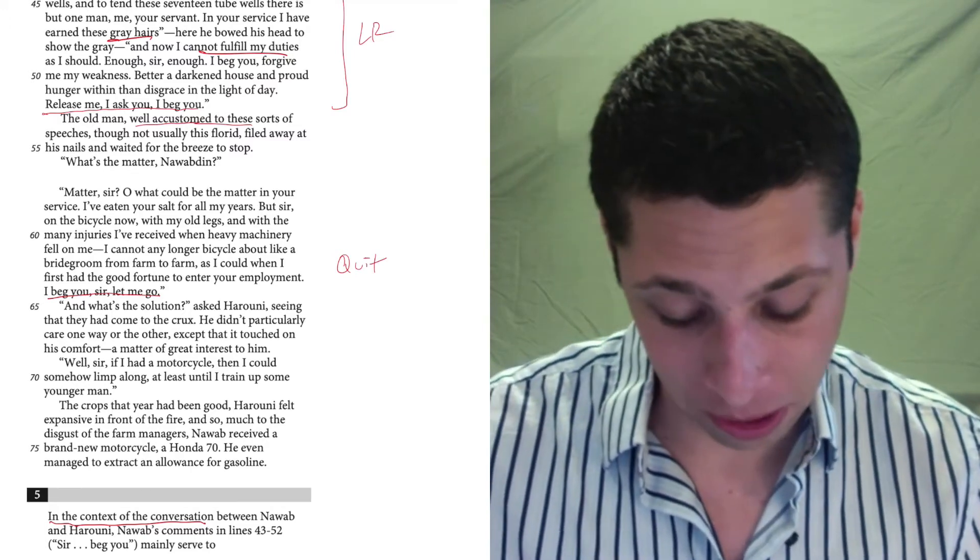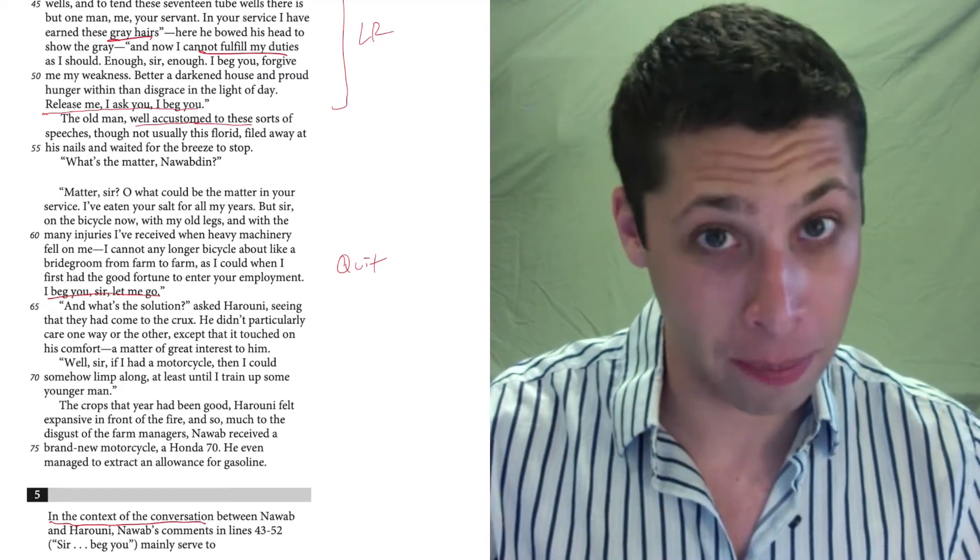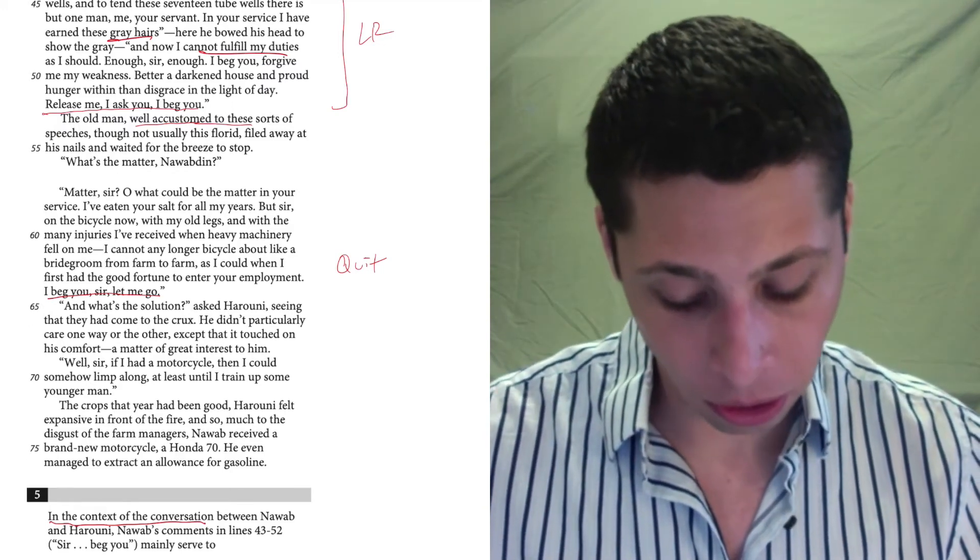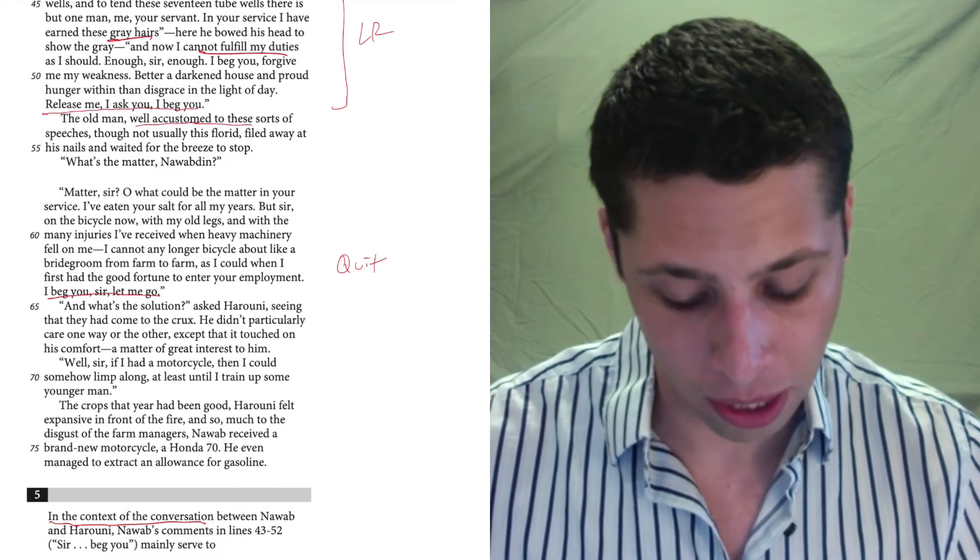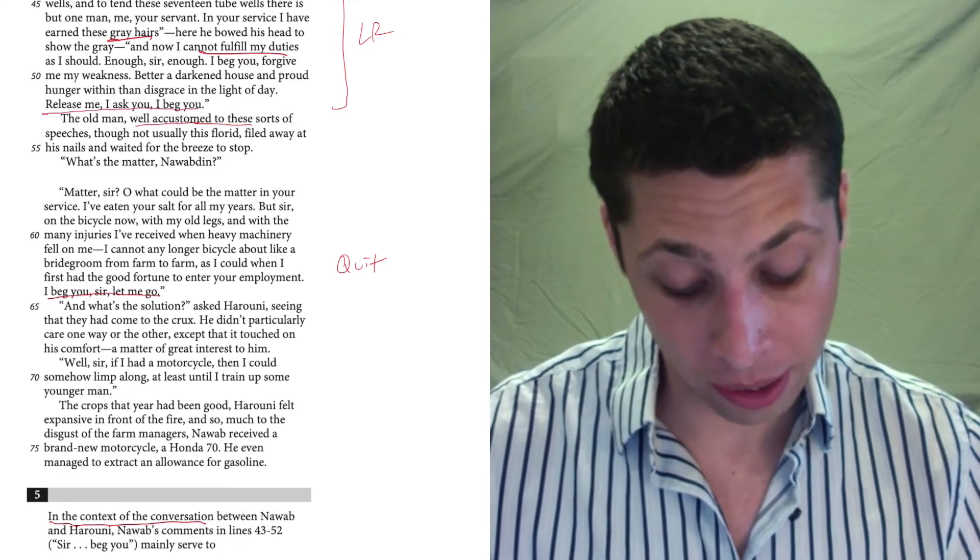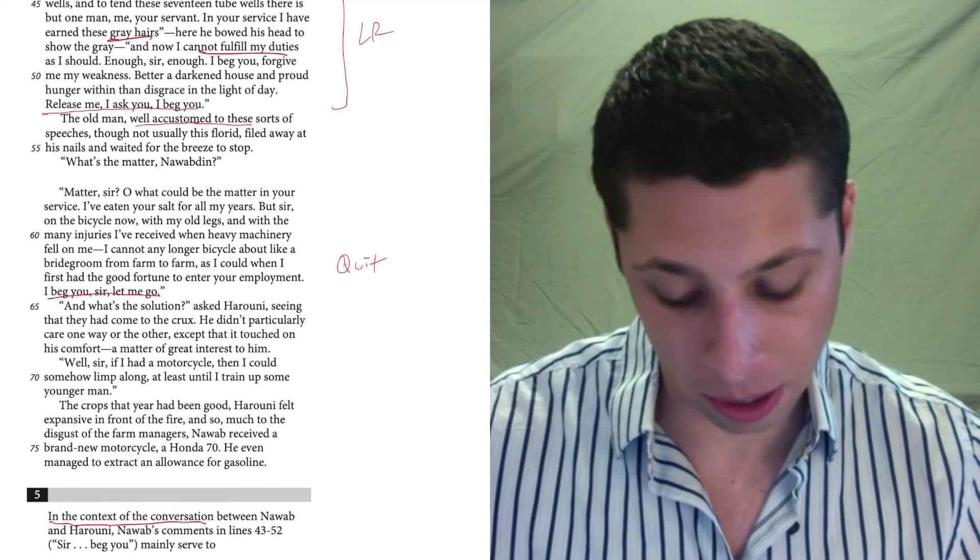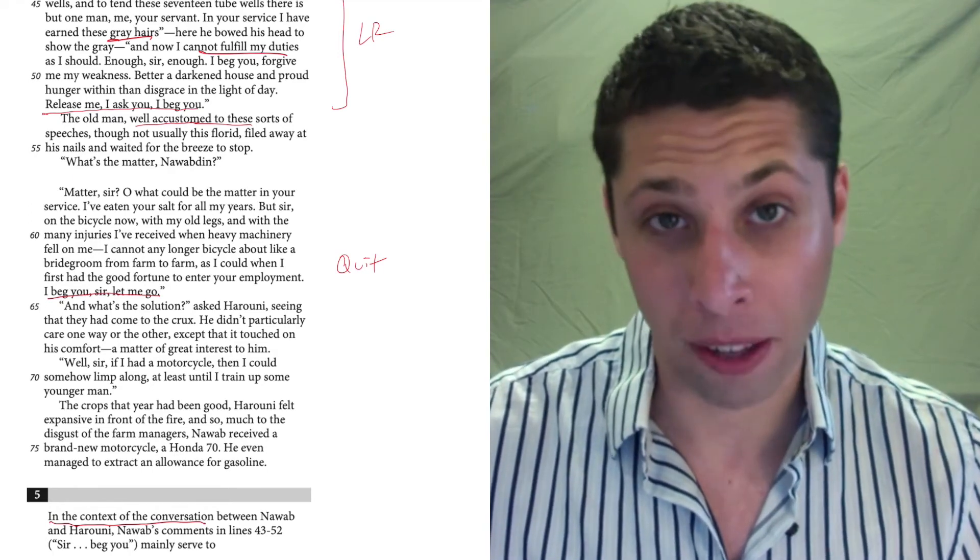But we keep reading. What's the solution, asked Haruni, seeing that they had come to the crux, meaning what they're really talking about. He didn't particularly care one way or the other, except that it touched on his comfort, a matter of great interest to him. Well, sir, if I had a motorcycle, then I could somehow limp along, at least until I train up some younger man. So then, Haruni says he'll give him the motorcycle.